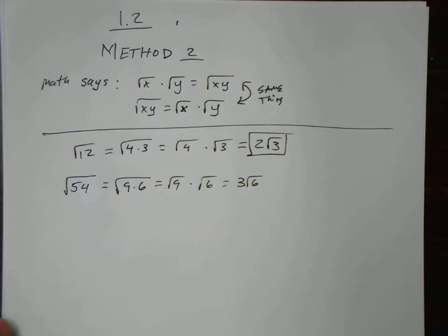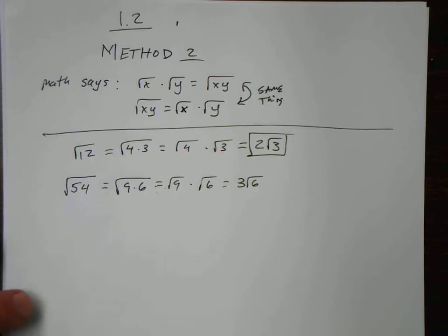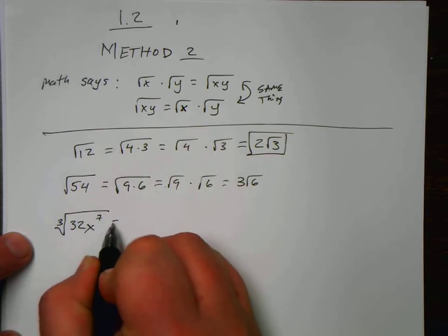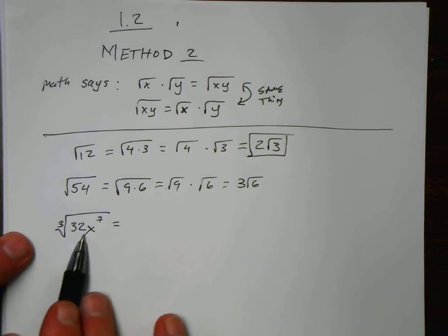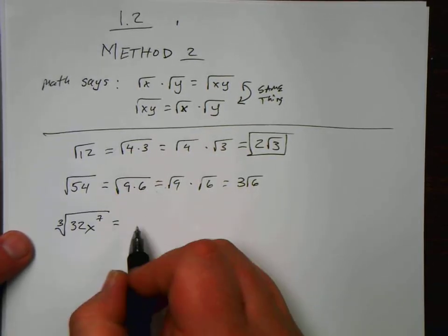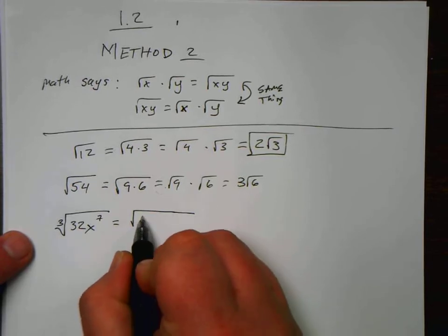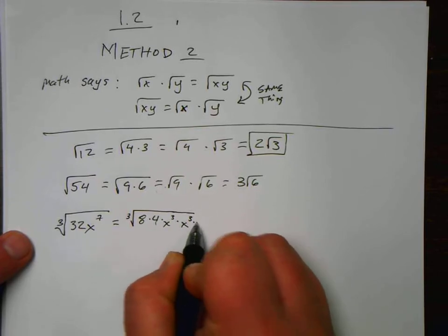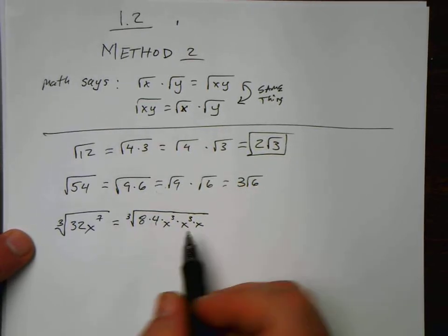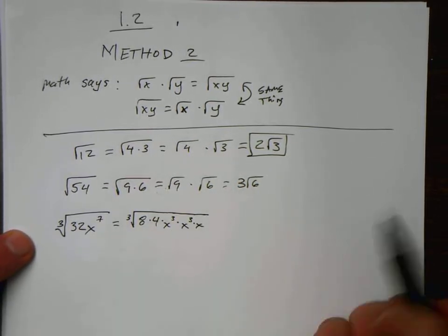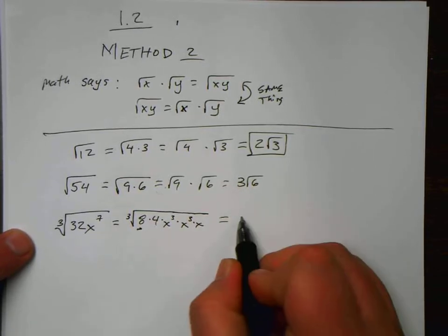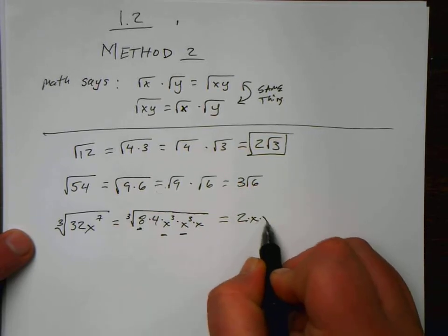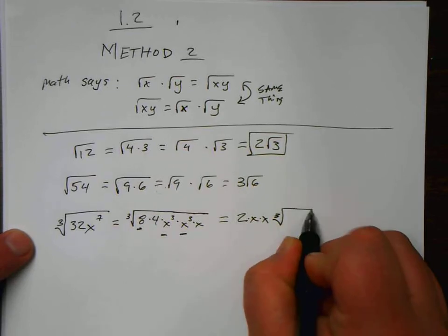Alright, so one more example here. Let's take a look at another one that's really gross. The cube root of 32x to the 7th. Alright, so cube roots. Well, I know there's a perfect cube of 32 and that's 8. So here I'm going to break this into 8 times 4. It's the cube root of 8 times 4 times x to the 3rd times x to the 3rd times x. And that will allow me to break this up. I'm going to skip this intermediate step here and just hop straight to the cube root of 8 is 2. The cube root of x to the 3rd is x. The cube root of x to the 3rd is x. And then I'm left with the cube root of 4x.